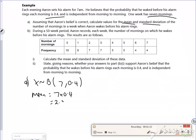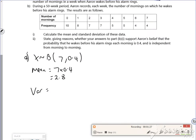The variance is 7 times 0.4 times 0.6, but I want the standard deviation.